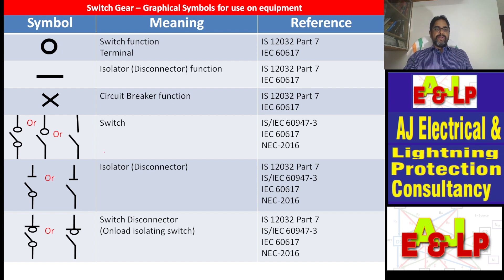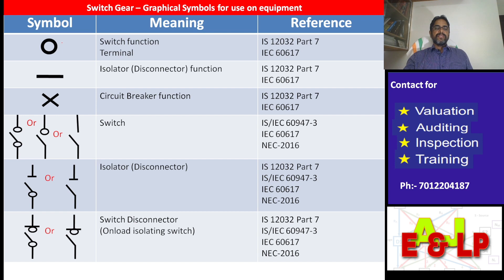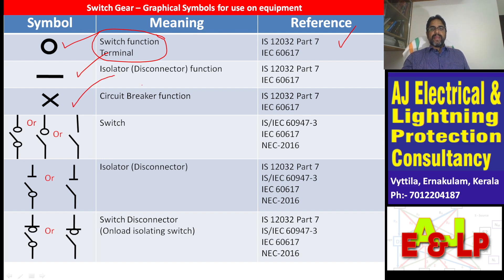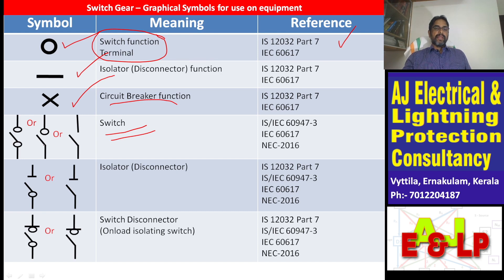The symbol shown is a circle and it is representing switch function — it is a terminal having the function of a switch. The next one is the terminal of an isolator. And the next one is the terminal of a circuit breaker, circuit breaker function. Switch means two round figures, and in the lower part instead of the round you can simply join. These three symbols are representing a switch.